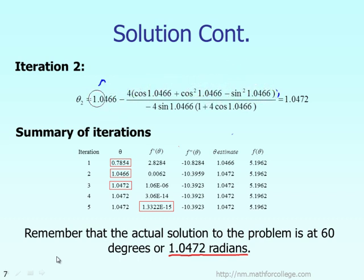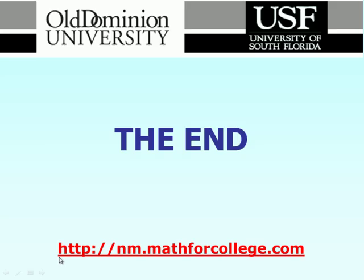That is the end of the Newton-Raphson example to find the optimum solution for a function with one variable.